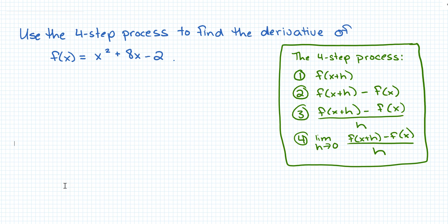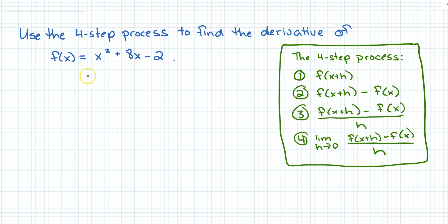Let's look at another example of using the four-step process to find the derivative of a function. This one's a little bit more complicated than the last one, but it's not too terribly tricky. As a reminder, the four-step process: first, find f of x plus h; then find f of x plus h minus f of x; then divide by h; and finally take the limit as h approaches 0. Starting with the function f of x equals x squared plus 8x minus 2.